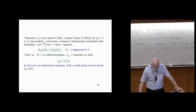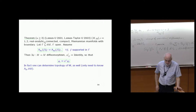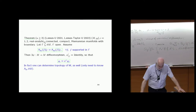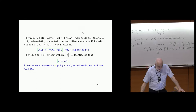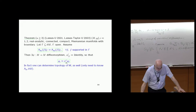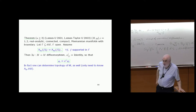For dimension three or higher, with Mati Lassas — and a better proof with Michael Taylor — we proved the conjecture even in the partial data case, but only in the real analytic case: if the metrics are real analytic and the Dirichlet-to-Neumann maps are the same for functions supported on a set, then there is a change of variables — the identity on that set — such that one metric is the pullback of the other.